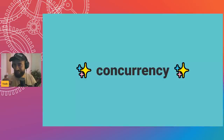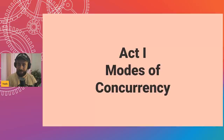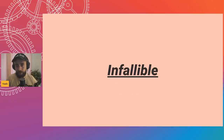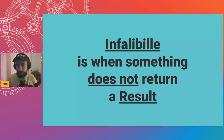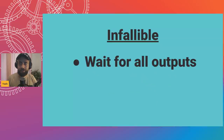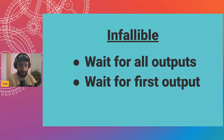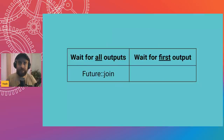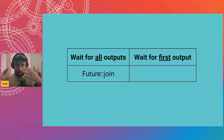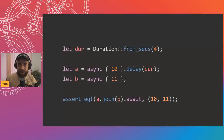First act: modes of concurrency. Infallible concurrency — a future which does not return a Result. The two modes are: wait for all inputs, or wait for the first input. Future join is 'wait for all inputs' — we give it a set of inputs, wait for all of them to resolve, and get a set of outputs back.